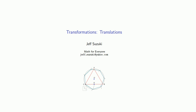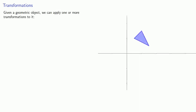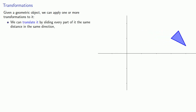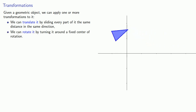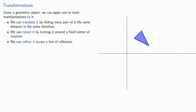One way we do that is through what's known as transformations, and this is really a geometric idea. Given a geometric object, we can apply one or more transformations to it. We can translate it by sliding every part of it the same distance in the same direction. We can rotate it by turning it around a fixed center of rotation. Or we can reflect it across a line of reflection. There are other transformations we can do, but these are the three principal ones.